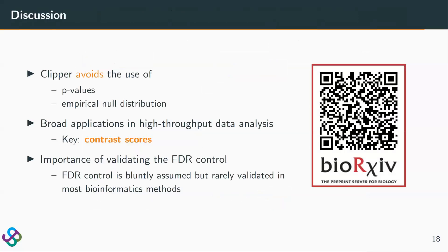To summarize, Clipper avoids the use of p-values or estimating the null distribution. The key of Clipper is the construction of contrast scores, which makes it flexible and with great application potential in high-throughput data analysis. We also want to voice the importance of validating FDR control, because in bioinformatics FDR is often assumed but rarely validated. This is the QR code for our bioRxiv manuscript.